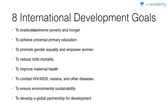Looking at specific targets: Target 1a indicates halving the number of people living on less than $1.25 a day between 1990 and 2015. Target 1b says achieve decent employment for women, men, and young people. Target 1c says half the proportion of people who suffer from hunger between 1990 and 2015.